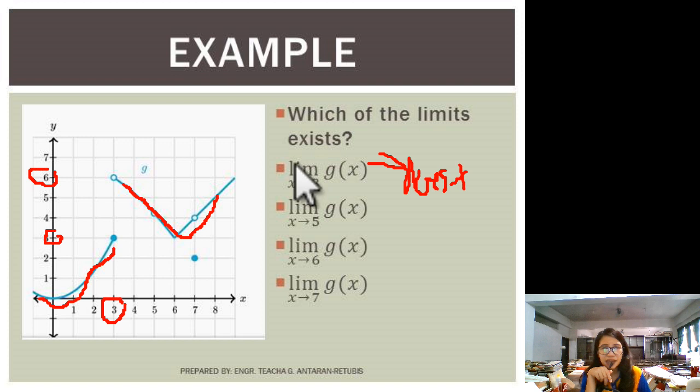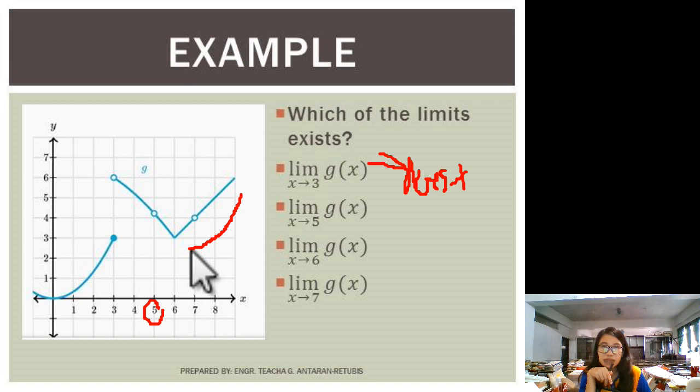Let us try the second choice, which is limit of g as x approaches 5. Where is 5? This one. This 5. Okay? So if you approach from right, what's the value? What does it approach to? It approaches 4. How about from the left? From left. Okay.